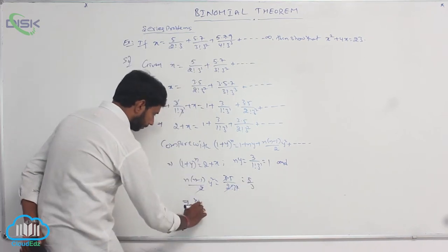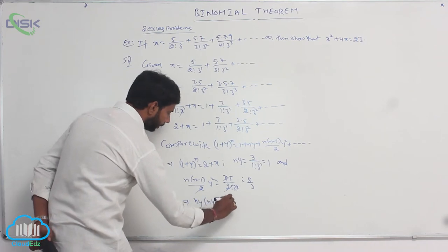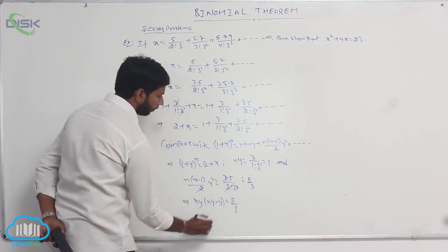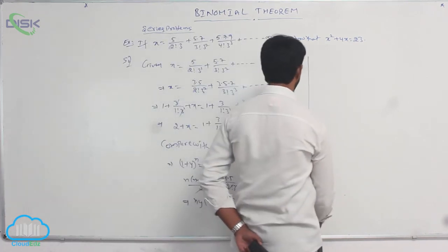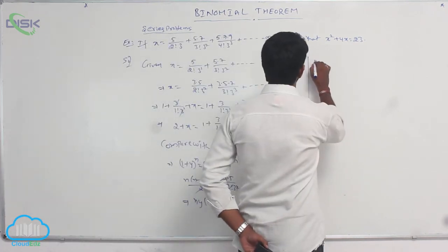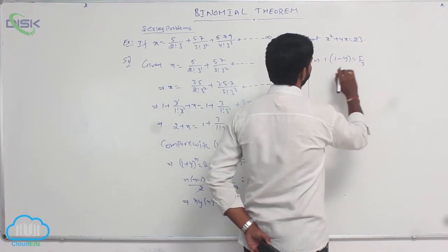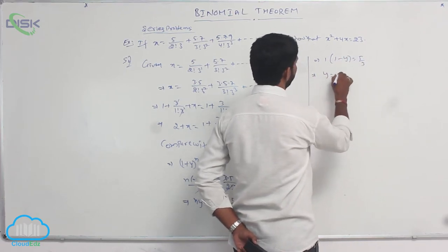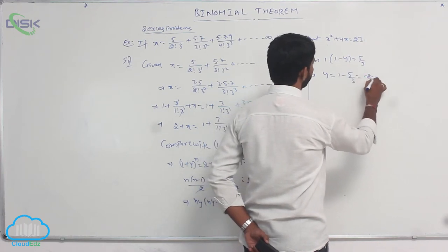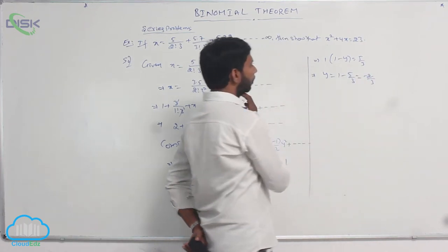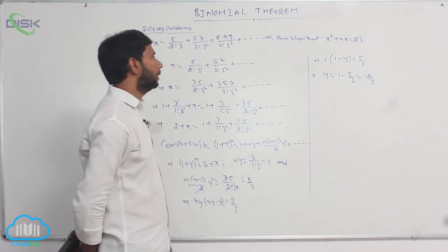This can be written as ny times ny minus y equals 5 by 3. Substituting the value of ny: 1 times 1 minus y equals 5 by 3. Therefore y equals 1 minus 5 by 3, which equals minus 2 by 3.